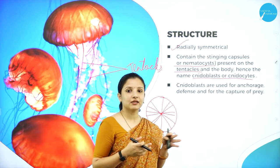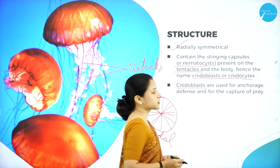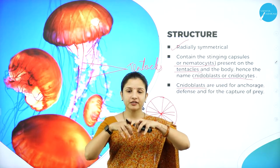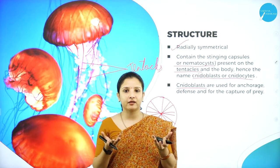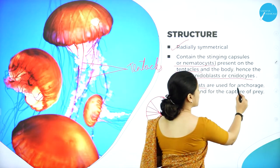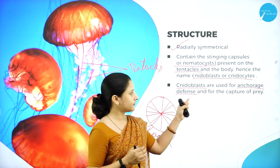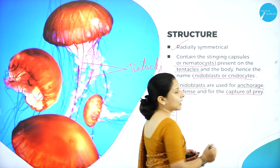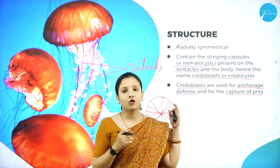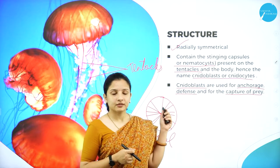Because nematocysts and stinging capsules are present, they are called Cnidoblasts or Cnidocytes. These are used for anchorage - to cling on to something - and also for defense purpose whenever there is a threat to protect themselves, and also for capturing the prey. That is, to hold the food, to anchor to the food. So for all these purposes, the Cnidoblasts and tentacles are actually helpful. This is about the structure of the Cnidarians.